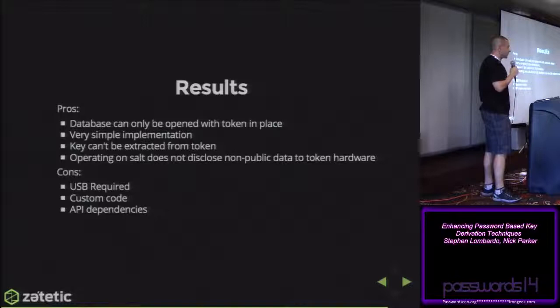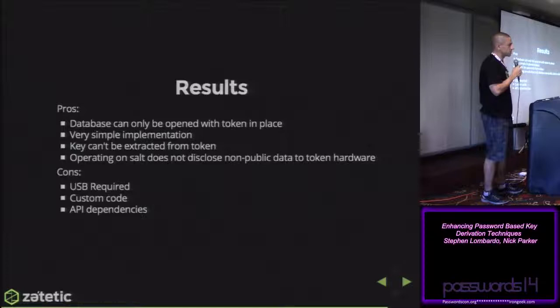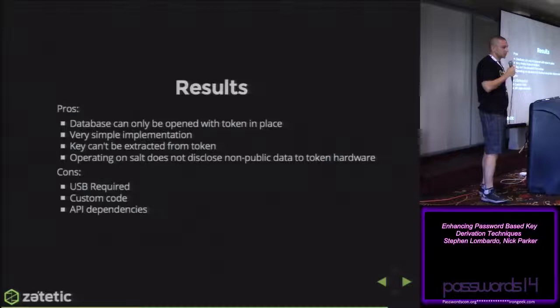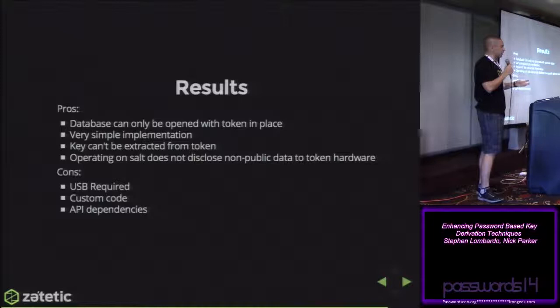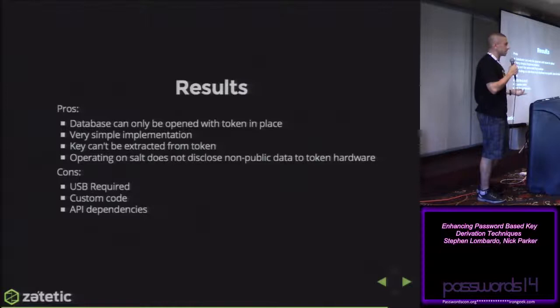The other cons involve additional code complexity. There's custom code for the SQL Cipher side, callbacks that do the work of interacting with the APIs, and then the API dependencies themselves. To implement this for two different hardware tokens, you need the Yubico C API, the YubiKey personalization API, the dot plug API which has a dependency on OpenSSL, and both have dependencies on libUSB. There's a pretty steep dependency chain involved with everything related to running it, though once up and running it can be handled in an automated build process.